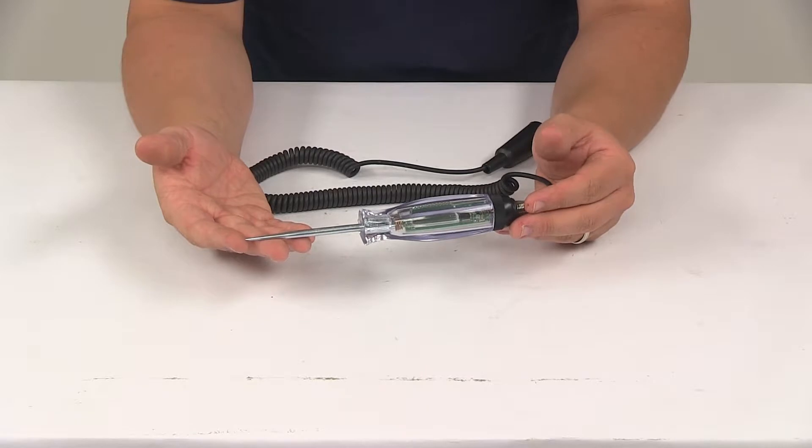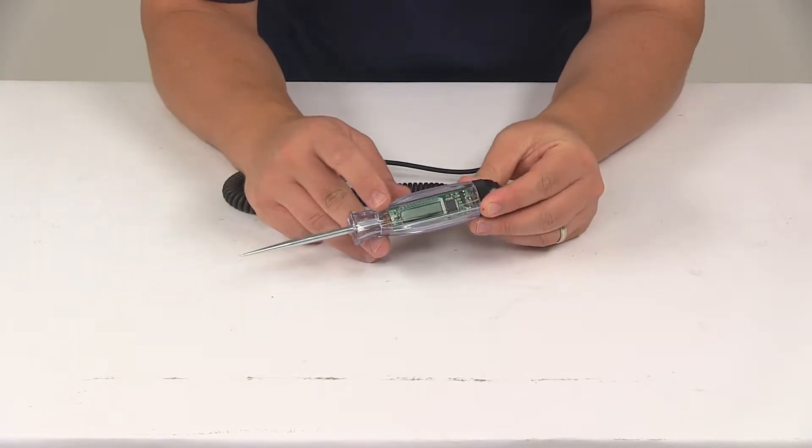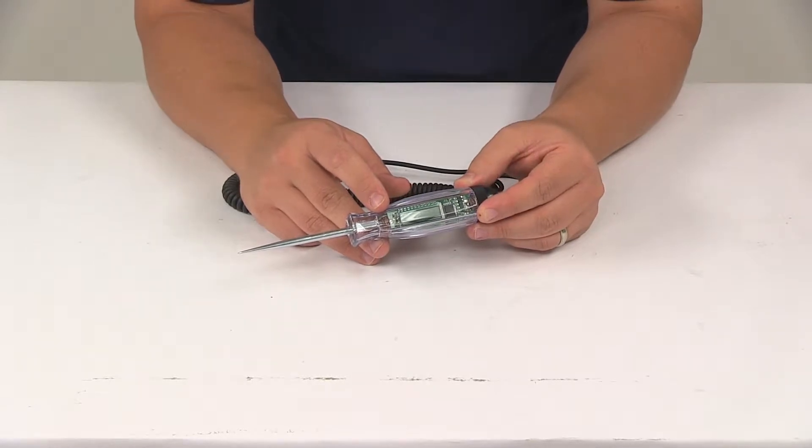This is going to allow you to conduct circuit tests with increased accuracy and ease. It's got the LED light in there that's going to indicate red for power or green for ground.